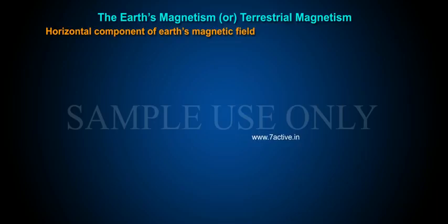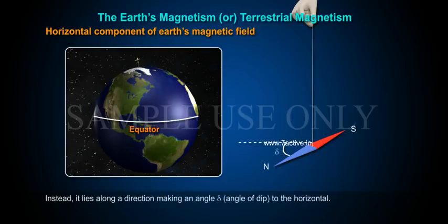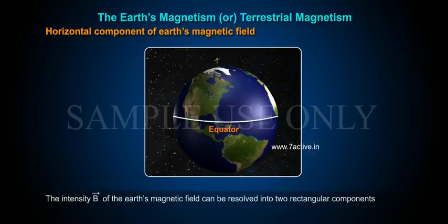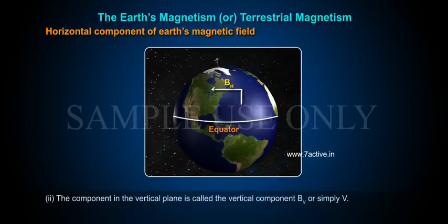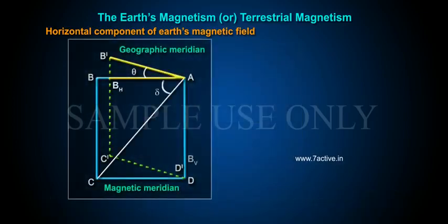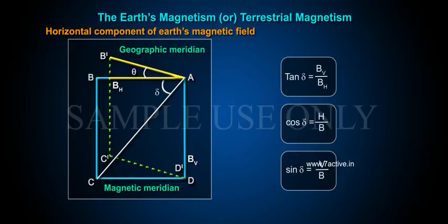Horizontal component of earth's magnetic field: the total intensity of the earth's magnetic field does not lie in any horizontal plane; instead it lies along a direction making an angle δ (angle of dip) to the horizontal. The intensity B of the earth's magnetic field can be resolved into two rectangular components. The component in the horizontal plane is called the horizontal component BH (or simply H). The component in the vertical plane is called the vertical component BV (or simply V). From the figure: tan δ = BV / BH, cos δ = H / B, sin δ = V / B.